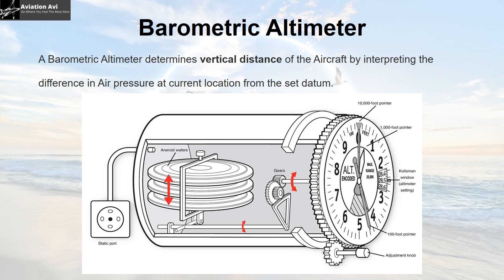The datum can be set in inches of mercury, millimeters of mercury, or hectopascals. As in the image, let us consider our datum is 28.5 inches of mercury. Thus the inner walls of the aneroid wafer or capsule feel the pressure in relation to 28.5 inches of mercury, whereas the outer walls feel the pressure fed in by the static port. If the pressure outside the capsule is greater, the capsule shrinks; if the pressure inside is greater, the capsule expands. This results in rotation of gears which move the needles of the barometric altimeter, indicating the vertical position of the aircraft in relation to the set datum.